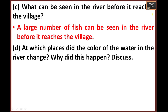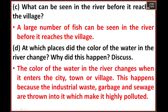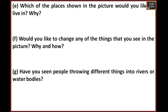At which places did the color of the water in the river change? Why did this happen? The color of the water in the river changes when it enters a city, town, or village. This happens because industrial waste, garbage, and sewage are thrown into it, which makes it highly polluted. Where the river starts it will be pure and blue in color, but when it enters the city or town it becomes polluted and the color changes.